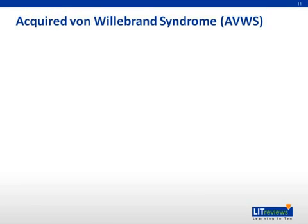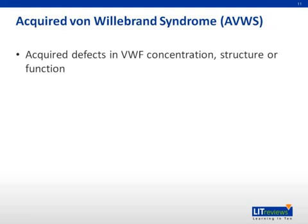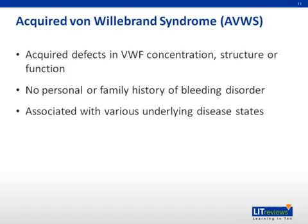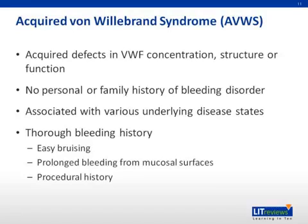In addition to the traditional von Willebrand disease classifications, it is now recognized that there is another classification known as acquired von Willebrand syndrome. This syndrome can present with acquired defects in von Willebrand factor concentration, structure, or function. It is very important to note that these individuals have no personal or family history of bleeding disorders, and it is associated with various underlying disease states. When present, it is important to look into other underlying diseases that may be associated with it. A thorough bleeding history is needed to delineate the difference between acquired von Willebrand syndrome and von Willebrand disease itself.